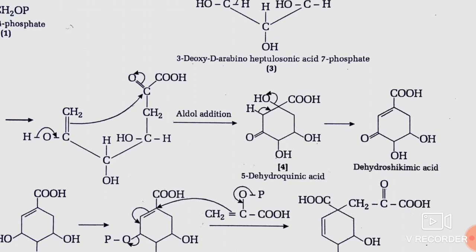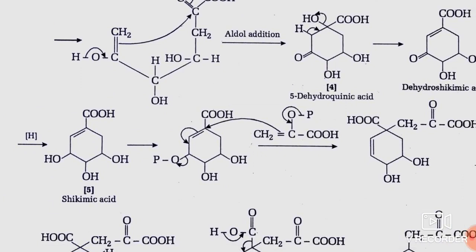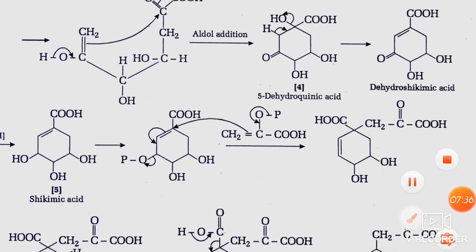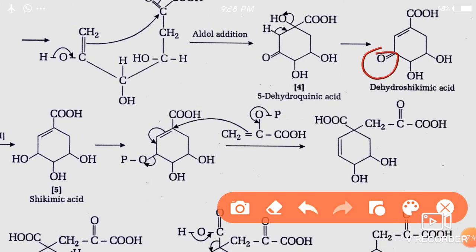This hydrocinnamic acid is under a dehydration process — you can see hydrogen and hydroxyl group both together. Dehydration occurs, the hydrogen is eliminated from the molecule, double bond formation takes place, and it is called dehydroshikimic acid. This dehydroshikimic acid looks like a hexane ring, but then it undergoes reduction.